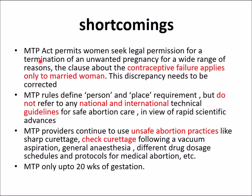Shortcomings of the MTP Act include: first, the clause about contraceptive failure applies only to married women, which needs correction. Second, MTP rules define person and place requirements but do not refer to any national or international technical guidelines for safe abortion care. Third, providers continue to use unsafe practices such as sharp curettes, general anesthesia following vacuum aspiration, and incorrect drug dose schedules. Fourth, the MTP Act only covers termination up to 12 weeks of gestation in certain provisions. These shortcomings need to be corrected.